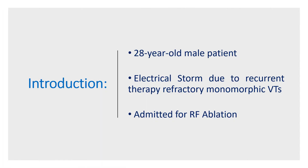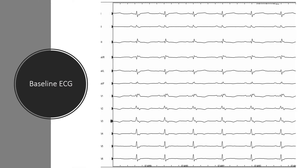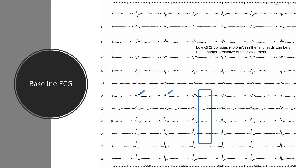Here is our patient, a 28-year-old man with electrical storm due to recurrent therapy refractory monomorphic VT, who was admitted for catheter ablation. Here is the baseline ECG of the patient, which shows epsilon wave and inverted T-wave in precordial leads. We have to remember that low QRS voltages in the limb leads can be an ECG marker predictive of left ventricular involvement in arrhythmogenic cardiomyopathy.